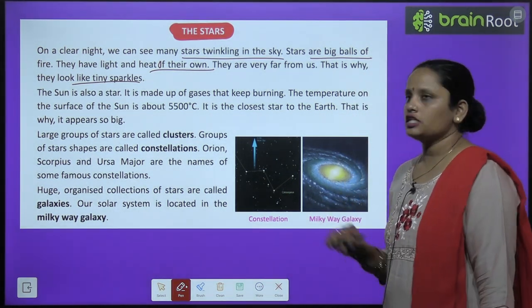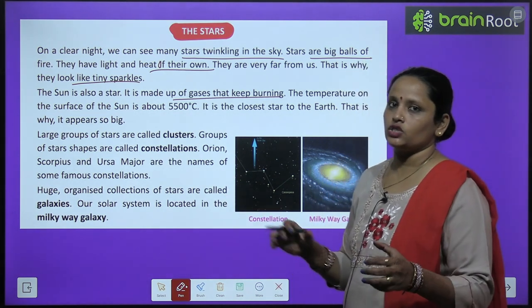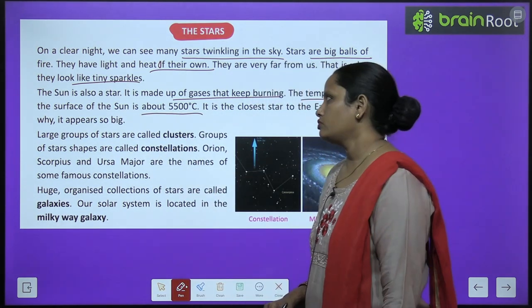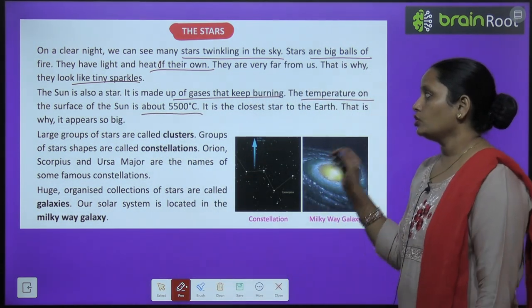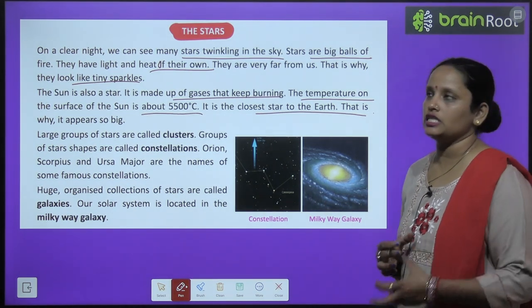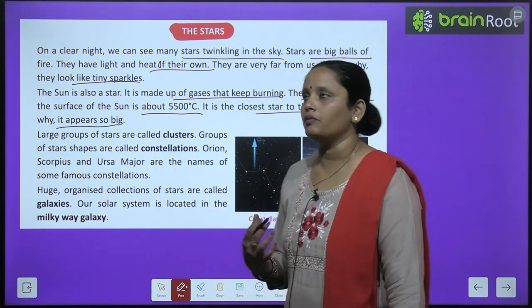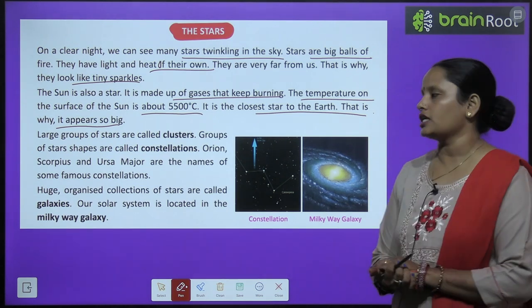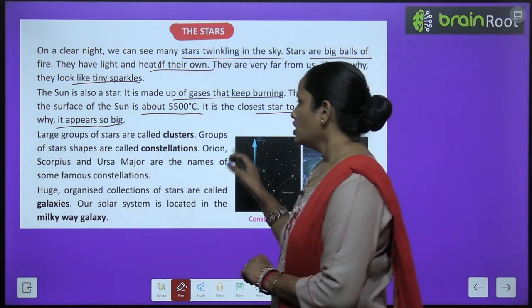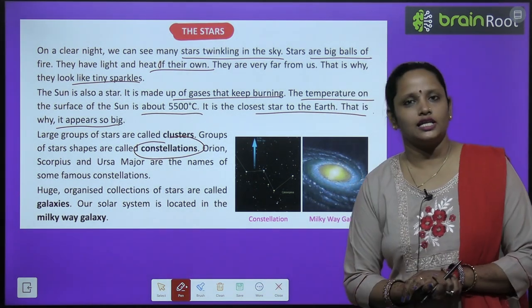The sun is made up of gases that keep burning. The temperature on the surface of the sun is about 5500 degrees Celsius. It is the closest star to the earth, that is why it appears so large. Large groups of stars are called clusters, and groups of stars that form a shape are called constellations.